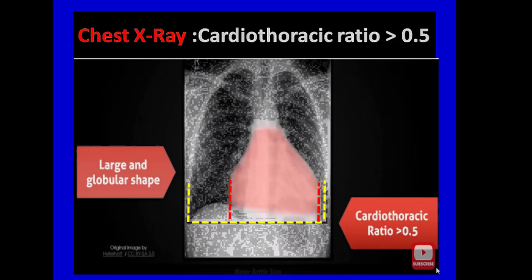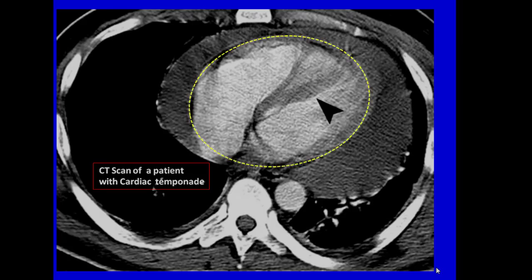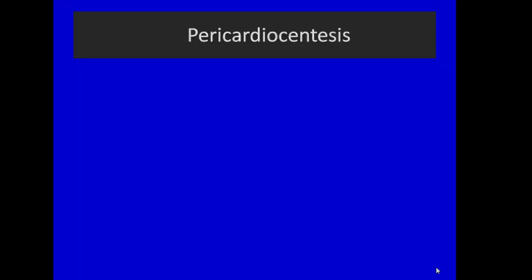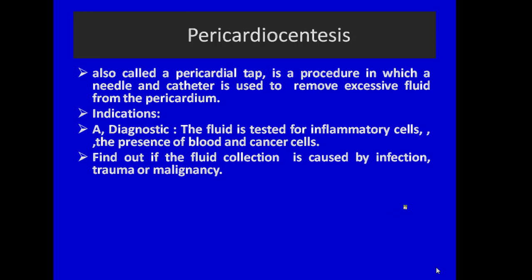How is pericardial effusion managed? Management depends upon the cause. If inflammatory, treat the cause. If traumatic, manage the injury. If tamponade occurs, pericardiocentesis is done to save the patient's life. On chest X-ray, the cardiac shadow appears enlarged and the cardiothoracic ratio is greater than 0.5. On echocardiography, fluid can be detected in the pericardial cavity. CT scan also shows the fluid collection. The treatment is pericardiocentesis — also called pericardial tap — a procedure in which a needle and catheter are used to remove excess fluid from the pericardium.